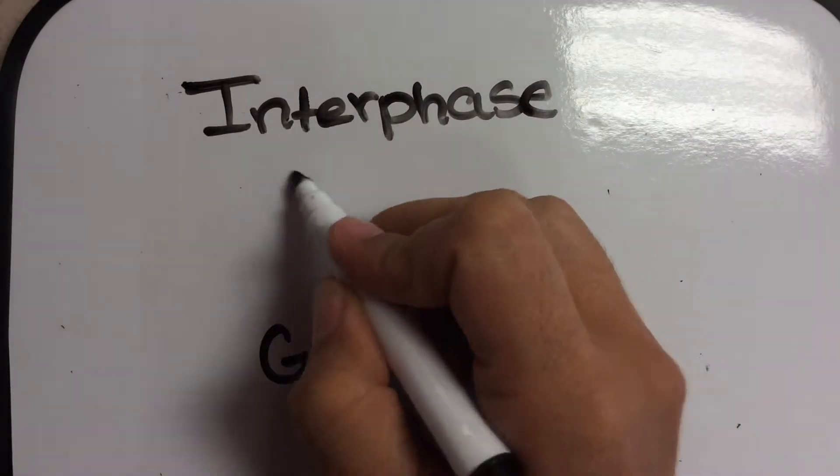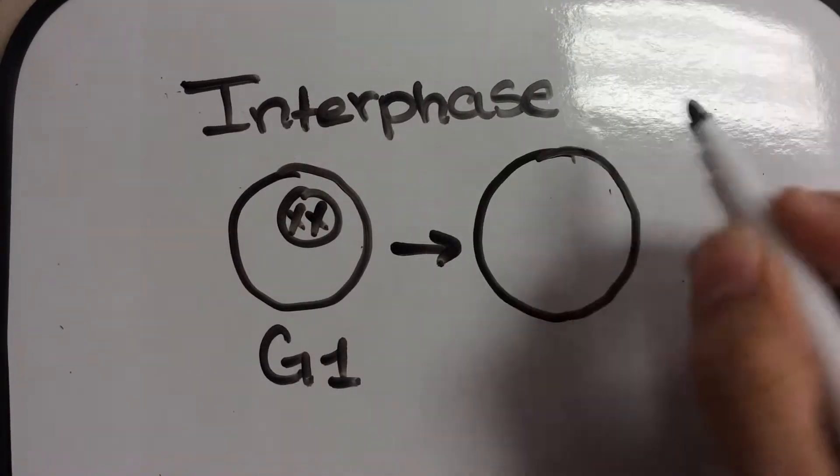The very first one is called G1. This is where the cell grows so that all the organelles inside can duplicate.